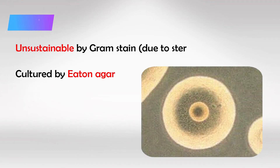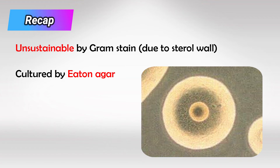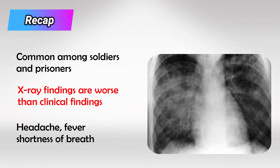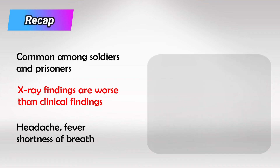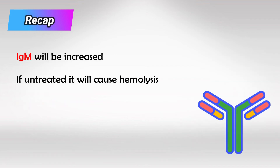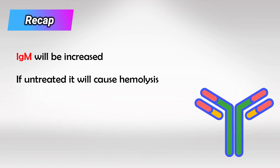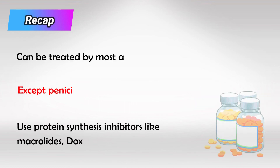To recap: Mycoplasma Pneumonia is an unstainable bacteria that we can culture using Eaton agar. It causes walking pneumonia among soldiers and prisoners, and the x-ray findings are significantly more severe than the patient's presentation. They will have high immunoglobulin M, known as the cold agglutinin test, which can lead to hemolysis. We treat them with protein synthesis inhibitors.